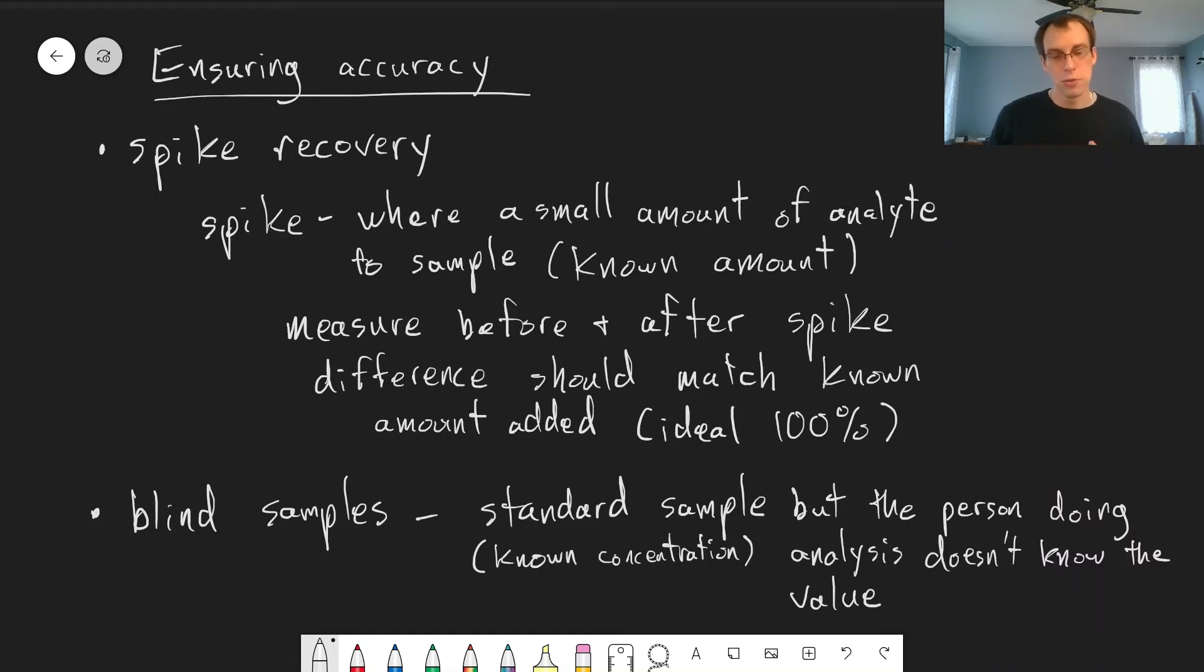Somebody else who is not doing the analysis knows what that actual amount is and basically double checks. Do those agree to within statistical uncertainty? We can use the same sort of tests that we talked about in the previous chapter, t-tests, statistical tests, to be able to do this comparison. And that can give you a sense of whether your results are accurate or whether there is something that needs to be addressed, some sort of systematic error.